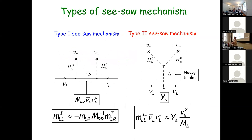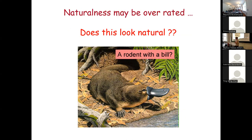Technically, to implement the seesaw mechanism, you add scalar content to your model. Depending on the scalar content — the symmetry pattern that's broken — you have Type 1, Type 2, or Type 3 seesaw, depending on whether you use singlets, doublets, or triplets. If you run a poll in the neutrino community asking whether neutrinos are Dirac or Majorana particles, 99.99% will say Majorana — because this is an elegant and natural way to explain why neutrinos are so much lighter than the rest of the fermions. However, naturalness may be overrated.